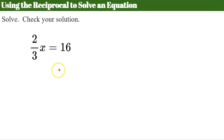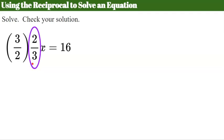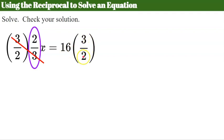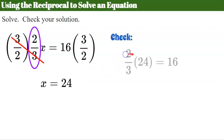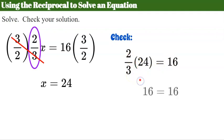We can also use the reciprocal to solve this equation. The reciprocal of 2 thirds is 3 halves. Multiply both sides by 3 halves. On the left, 3 halves times 2 thirds equals 1, leaving x. On the right, 16 times 3 halves: divide 16 by 2 to get 8, then multiply by 3 to get 24. Checking: 2 thirds times 24 — 24 divided by 3 is 8, times 2 is 16 — it checks. Solution is x equals 24.